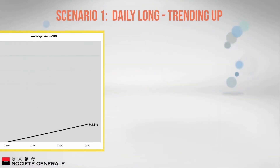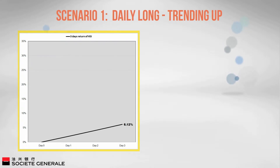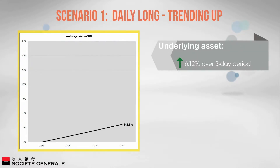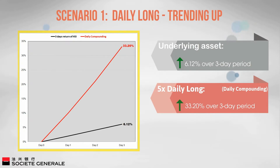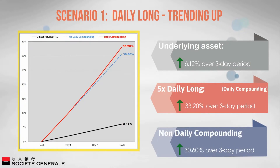Daily long — trending up: Assuming the market is trending up, the underlying asset's daily performance is 2% for three consecutive days. The underlying asset has increased a total of 6.12% over the three-day period. However, the five times daily long would have increased 33.2%, which is 5.42 times the performance of the index (calculated as 33.2 divided by 6.12). This is because each day the return is applied to a progressively larger amount. Without daily compounding, the five times daily long would have only increased by 30.6% (6.12% × 5).